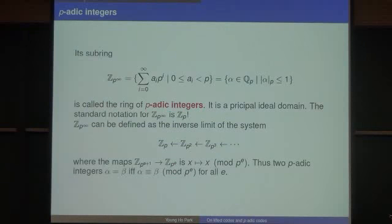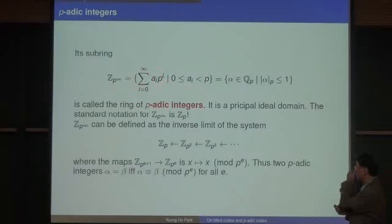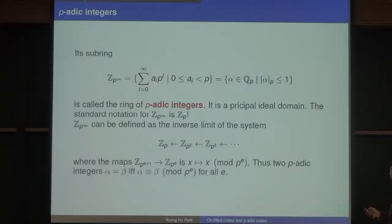The subring Z_p-infinity is defined to be every element in Q_p with absolute value less than or equal to one, having the form a_0 plus a_1 p plus a_2 p-squared, etc., where a_i is between 0 and p minus 1. This ring is called the ring of p-adic integers, and it is a principal ideal domain.